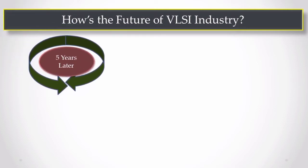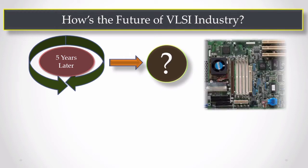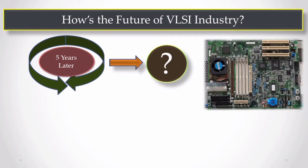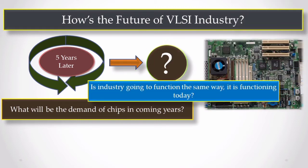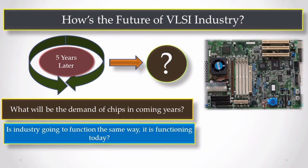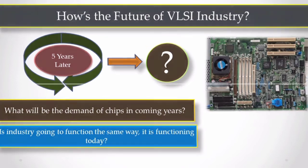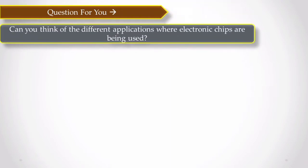So when I talk about future, it basically includes like after 5 years or 10 years, how this industry is going to function. Supply and demand is going to work on that basis. Also the way industry is operating currently, so the same pattern will be followed in future also. Next question, can you tell me what are the areas where you have seen VLSI chips are being used? Just do one thing, pause this video here and write down in the comment section.